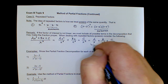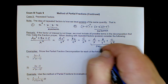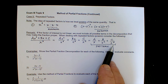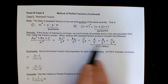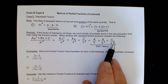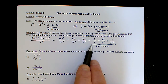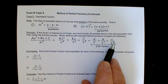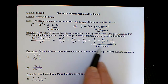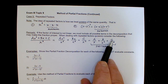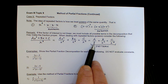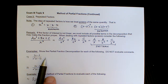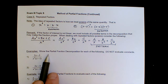Notice the pattern for dealing with repeated factors. You'll have as many fractions as the power on the repeated factor. Start with the unique factor raised to the first power in the first fraction, and keep increasing the power until you reach the given power. What goes above each fraction is whatever makes the unique factor proper — here it's a linear factor, so just a constant term above each.